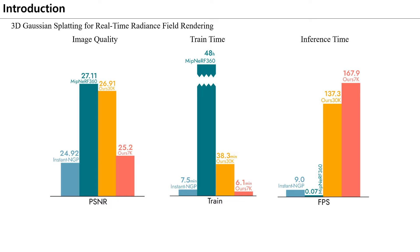Speed can be divided into train speed and inference speed. From a quality perspective, MipNeRF 360, which Google unveiled at CVPR 2022, showed the best performance. In terms of train speed, Instant NGP released by NVIDIA at SIGGRAPH 2022 showed the best performance.